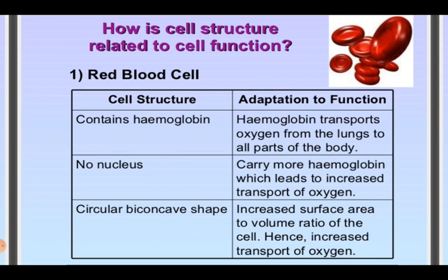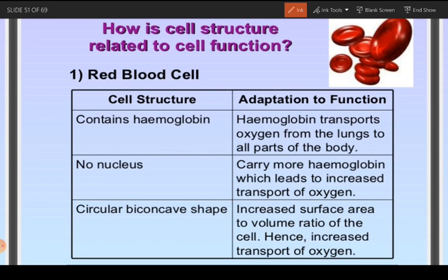Now we will discuss some examples of the process of differentiation. We will see how some cells have adapted certain features which are very important to perform their special function. The first example is that of the red blood cell. We will see its structure in detail. The adaptations that red blood cells have developed help them to perform their function, which is to transport oxygen from the lungs to all parts of the body.